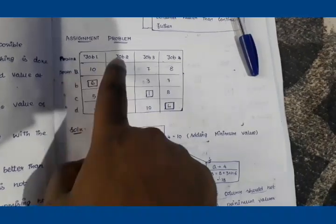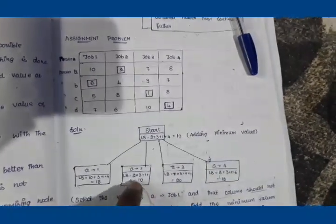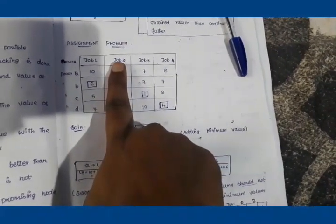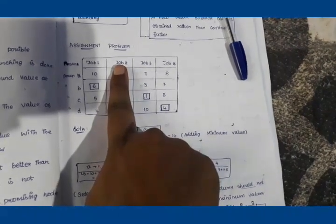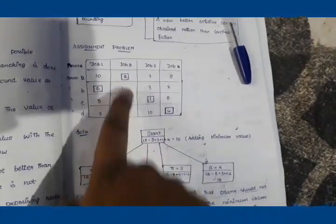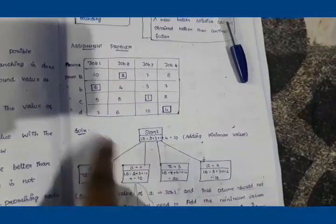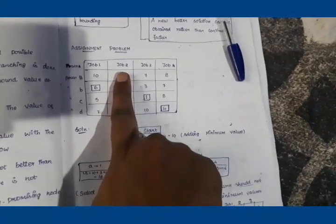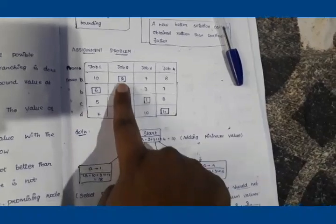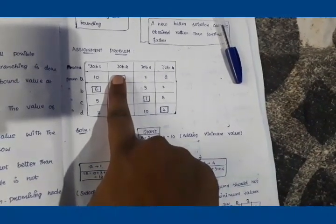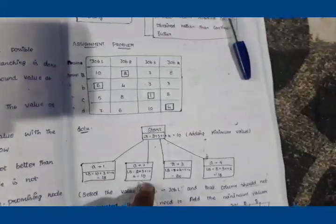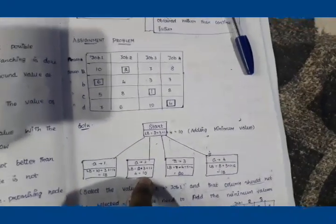If A is assigned to Job 2, the cost is 2. We hide Job 2's column and find minimums for the remaining persons. For Person B the minimum from Jobs 1, 3, 4 is 3; for Person C the minimum from Jobs 1, 3, 4 is 1; for Person D the minimum is 4. Total: 2 + 3 + 1 + 4 = 10.